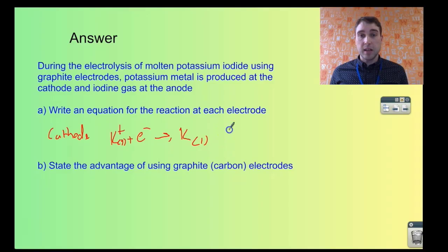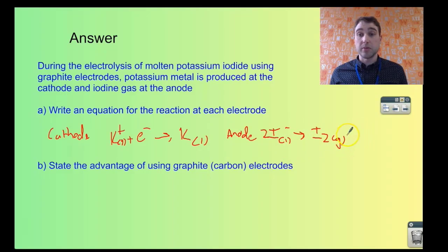At the other side at the anode, we're making iodine gas. The iodide ions, we're going to need two of those. They're giving up their electrons because they're being oxidized. So they're being oxidized to iodine, and that's a gas. They're molten in there so we call that liquid. And we need to have our two electrons on that side.